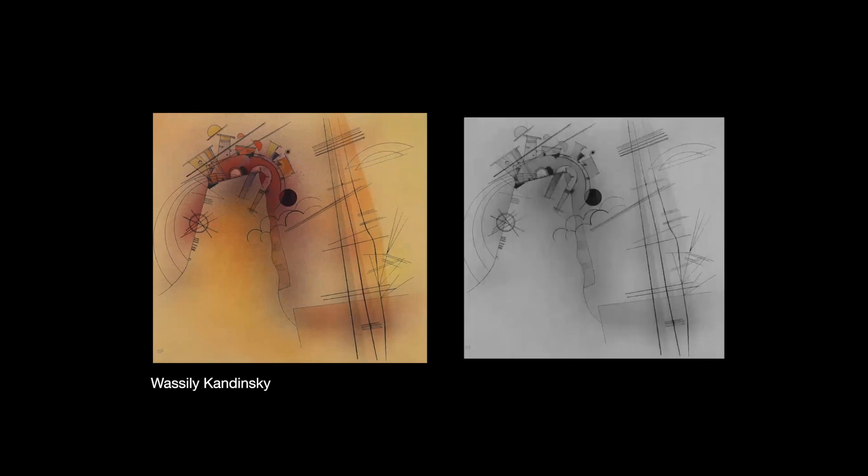Another Kandinsky — in this case, lower value contrast, as we can see when we look at the grayscale version of it. When you take the color away, you have a really great opportunity to study composition and to see how the various parts are interacting with each other, because you no longer have the color as a distraction.